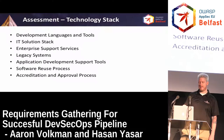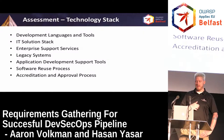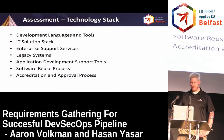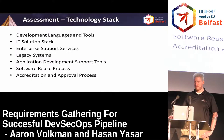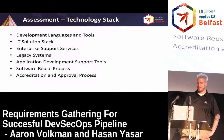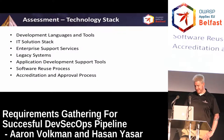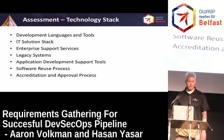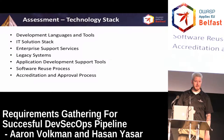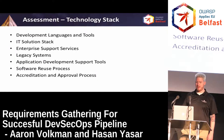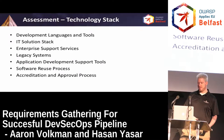Next we look at the technology stack: the languages and tools they use, the IT solution stack, what kind of virtualization they use, what operating systems they support, enterprise support services, cloud services, issue trackers, legacy systems — especially if integrated with new things being developed — and application development support tools like Visual Studio, Eclipse, IntelliJ, Vagrant, Chef, and Puppet. We look at the software reuse process — we don't want to reinvent the wheel, so how are internal libraries tracked and managed? And also the accreditation and approval process for all technologies and tools being brought in, as well as what they're releasing.